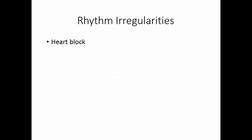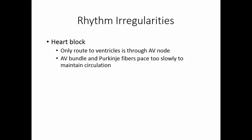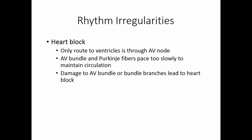Another problem is heart block. The AV node is the only route to the ventricles — that connective tissue between the atria and ventricles prevents impulses from the SA node from getting to the ventricles. The AV bundle and Purkinje fibers will pace but only at 30 beats per minute, which is too slow to maintain circulation. So if there's any damage to the AV bundle or bundle branches, the ventricles don't get the signal to contract. In this case, a pacemaker can be installed — either a fixed-rate pacemaker or a demand pacemaker that only kicks in when necessary.